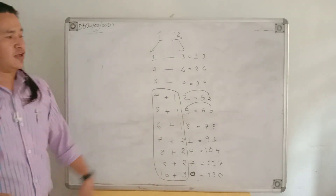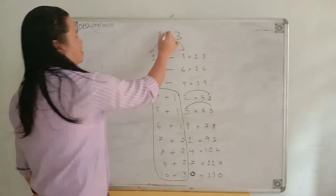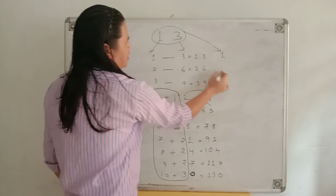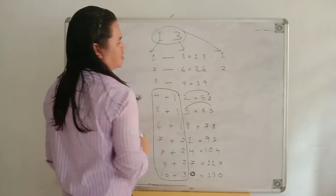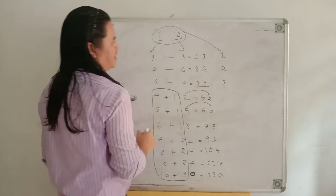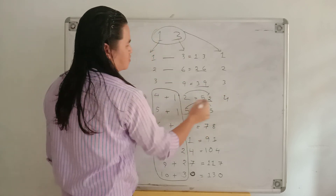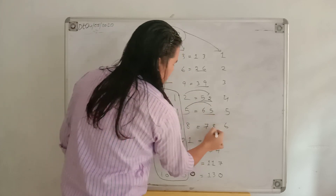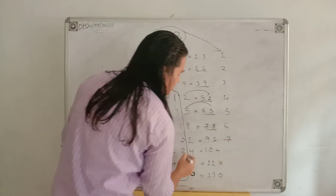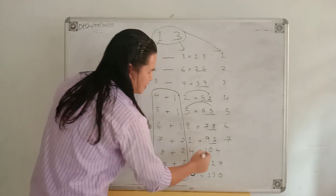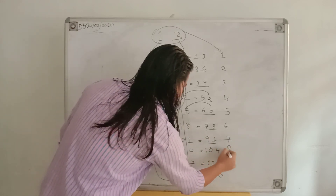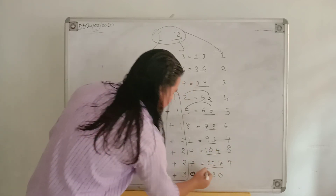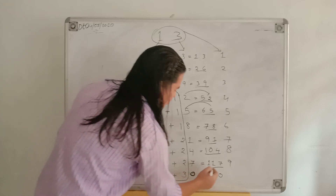So now you got the table of thirteen. See here: thirteen ones are thirteen, thirteen twos are twenty-six, thirteen threes are thirty-nine, thirteen fours are fifty-two, thirteen fives are sixty-five, thirteen sixes are seventy-eight, thirteen sevens are ninety-one, thirteen eights are one-hundred-and-four, thirteen nines are one-hundred-and-seventeen, and lastly thirteen thirties — thirteen tens are one hundred and thirty.